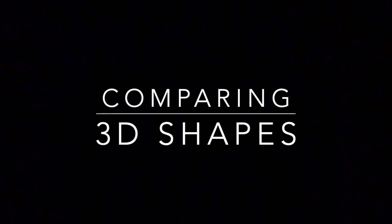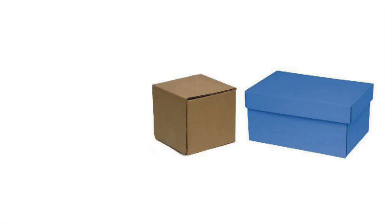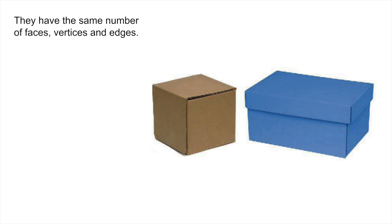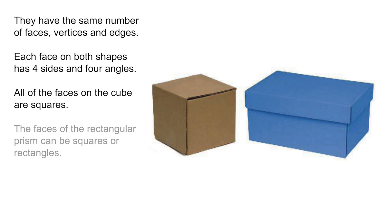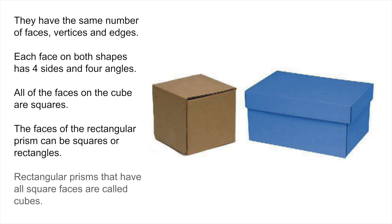Now, let's start comparing some of our three-dimensional shapes. Here we have a cube and a rectangular prism. What do you notice when you look at these shapes? I noticed they have the same number of faces, vertices, and edges. Each face on both shapes has four sides and four angles. All of the faces on the cube are squares. The faces on the rectangular prism can be squares or rectangular. And rectangular prisms that have all square faces are called cubes — they're a special kind of rectangular prism.